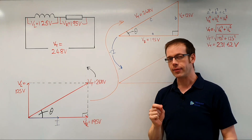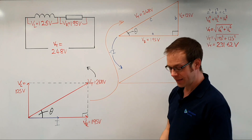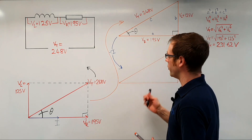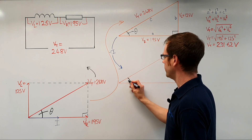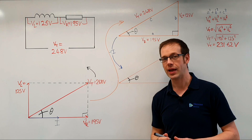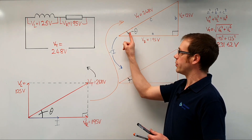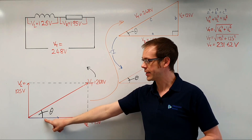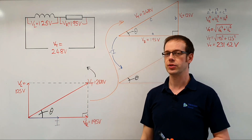The key thing to understand here is that this angle is still the same — it is the same angle as in the voltage triangle. That is really important. That angle is the same, and it is the angle between the current flowing into the circuit and the voltage applied to the circuit.